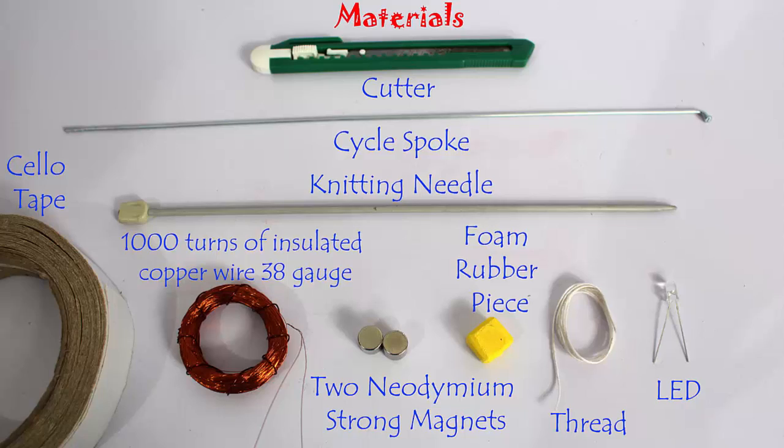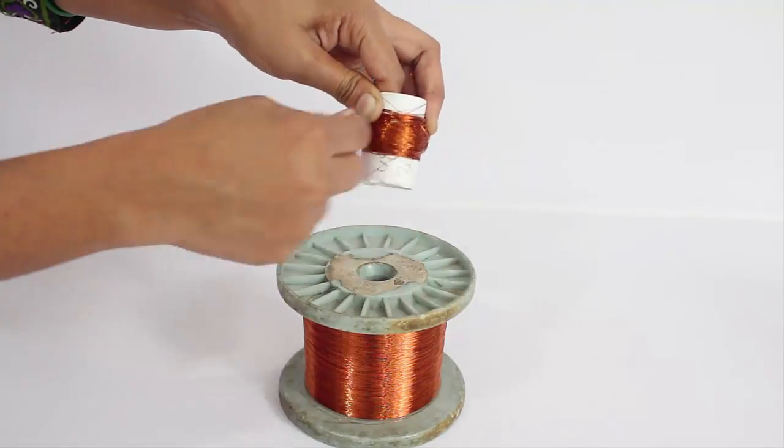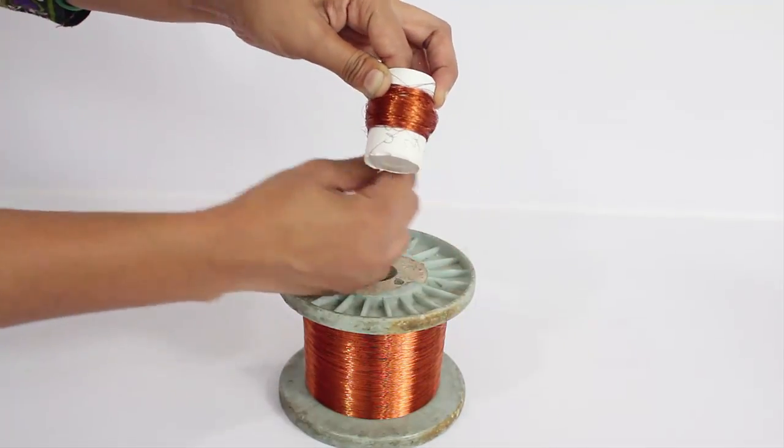To make this open generator you require 1000 turns of insulated copper wire, 38 gauge, a knitting needle, and neodymium magnets.